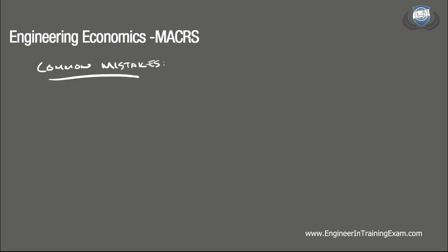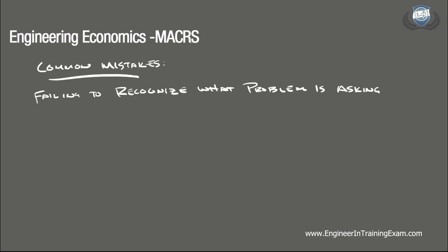There are a few ways that we can mess up on a problem like this. The most common is just failing to recognize what the problem is asking for. In this case, we are asked to determine the depreciation in a single year during the lifespan of the asset. It would be easy to determine the cumulative depreciation up to this year, or the book value at this point, or make some other simple mistake.